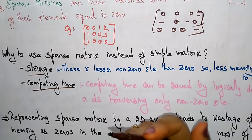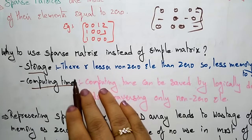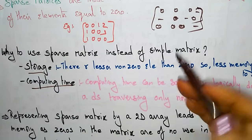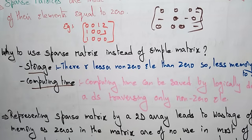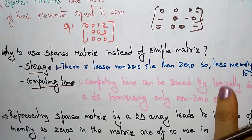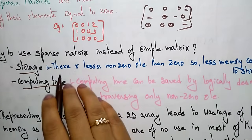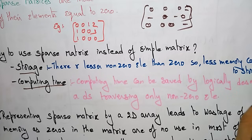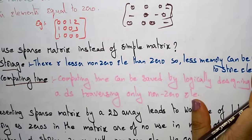In the case of storage, if you use a sparse matrix, there are lesser non-zero elements than zeros. The sparse matrix is going to evaluate only the non-zero elements and avoids the zero elements. So there are lesser non-zero elements than zeros, meaning less memory can be used to store the elements.